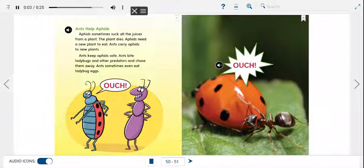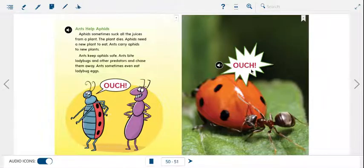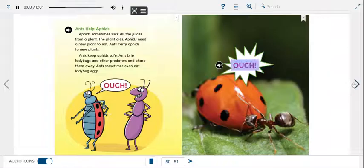Ants help aphids. Aphids sometimes suck all the juices from a plant. The plant dies. Aphids need a new plant to eat. Ants carry aphids to new plants. Ants keep aphids safe. Ants bite ladybugs and other predators and chase them away. Ants sometimes even eat ladybug eggs.